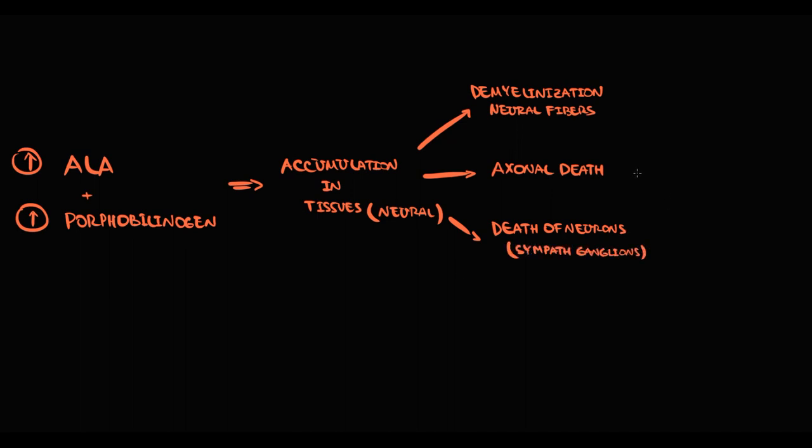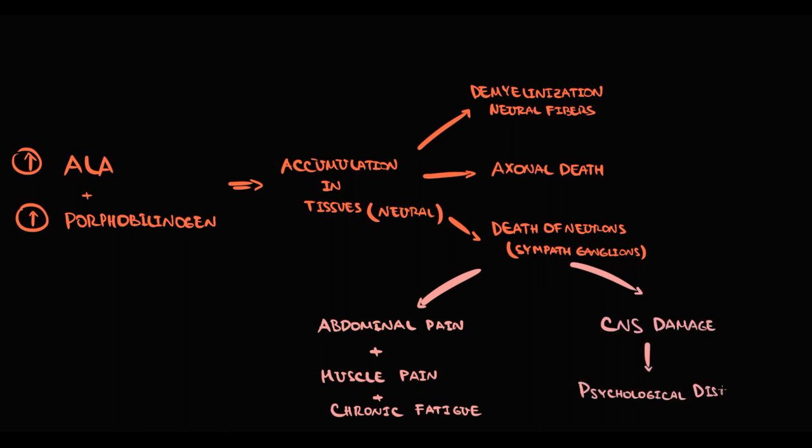So polyneuropathy develops. Initially it causes damage to sensory neurons in peripheral nervous system. And this greatly increases pain sensitization and as a result it causes symptoms such as abdominal pain and muscle pain. And both of them in long-term perspective cause chronic fatigue. And this time it also causes damage to central nervous system, and this causes multiple psychological disturbances.